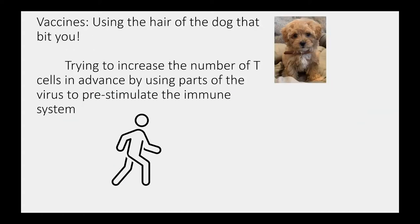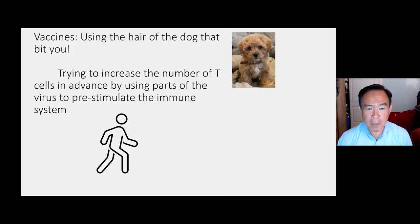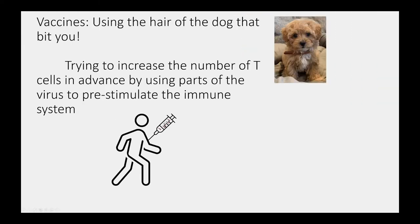Now, how does a vaccine work? So the concept behind a vaccine is basically the good old dogma using the hair of the dog that bit you. So this is our little puppy, Bo. He's actually a lot bigger now. That's when we just got him. But the concept behind a vaccine is take that little bit of the virus that's invading us and try to increase the number of T cells and antibodies by pre-stimulating the immune system. So what we get when we get a vaccine are pieces of the virus. It's not the whole virus. It's just parts of it.